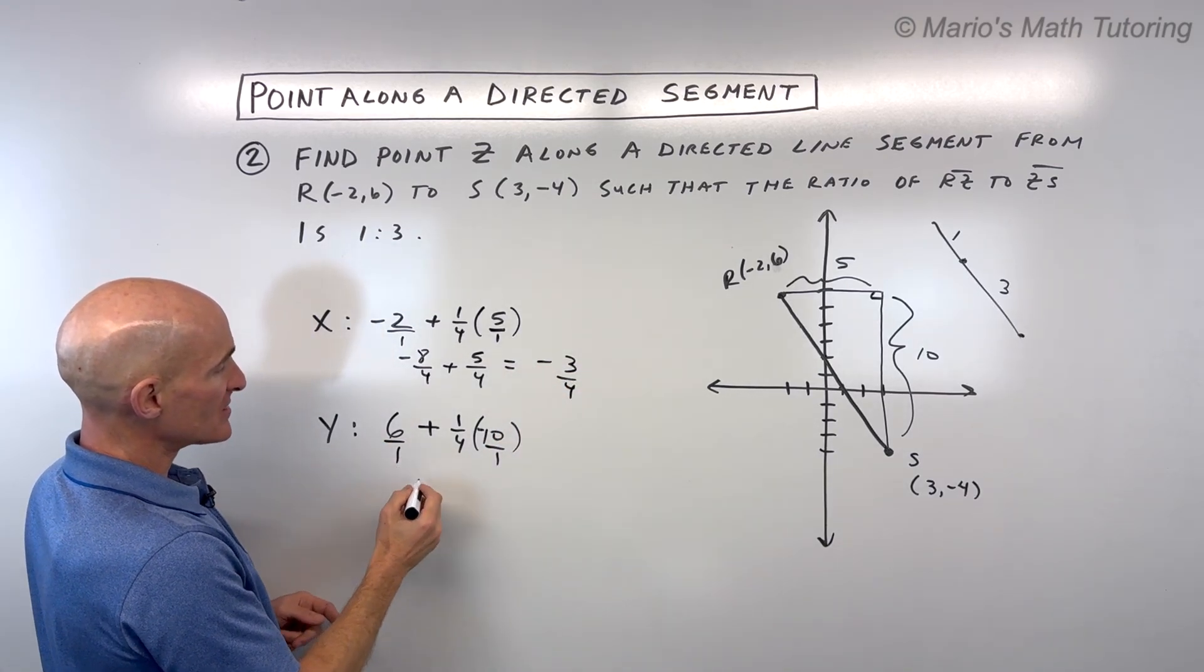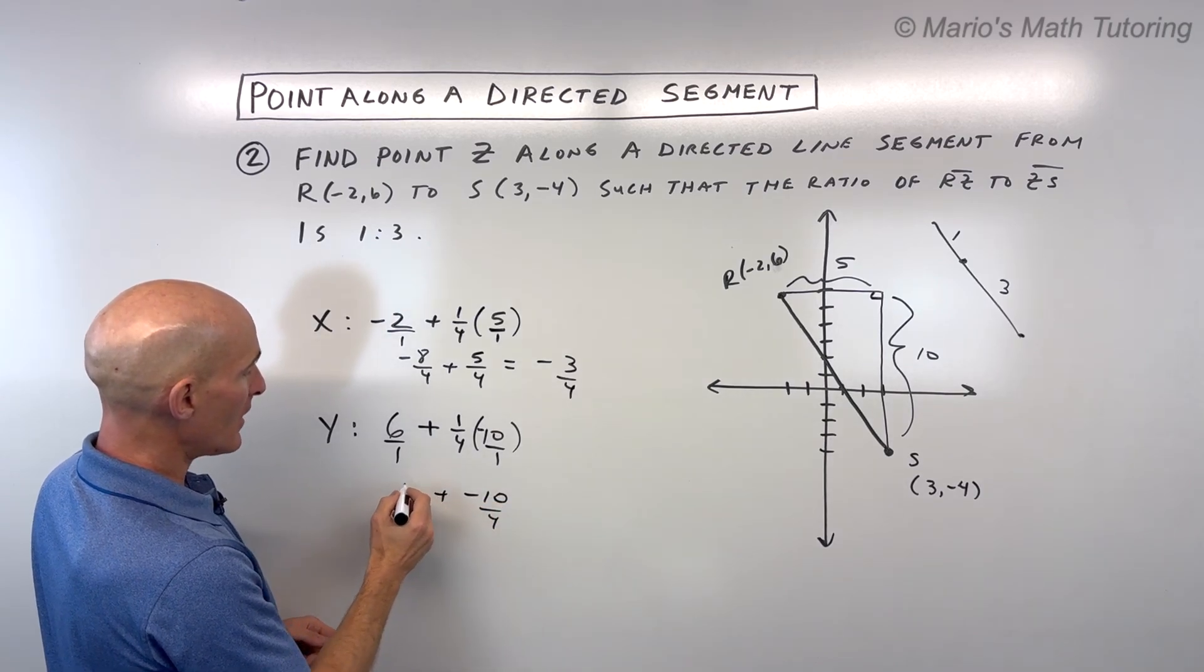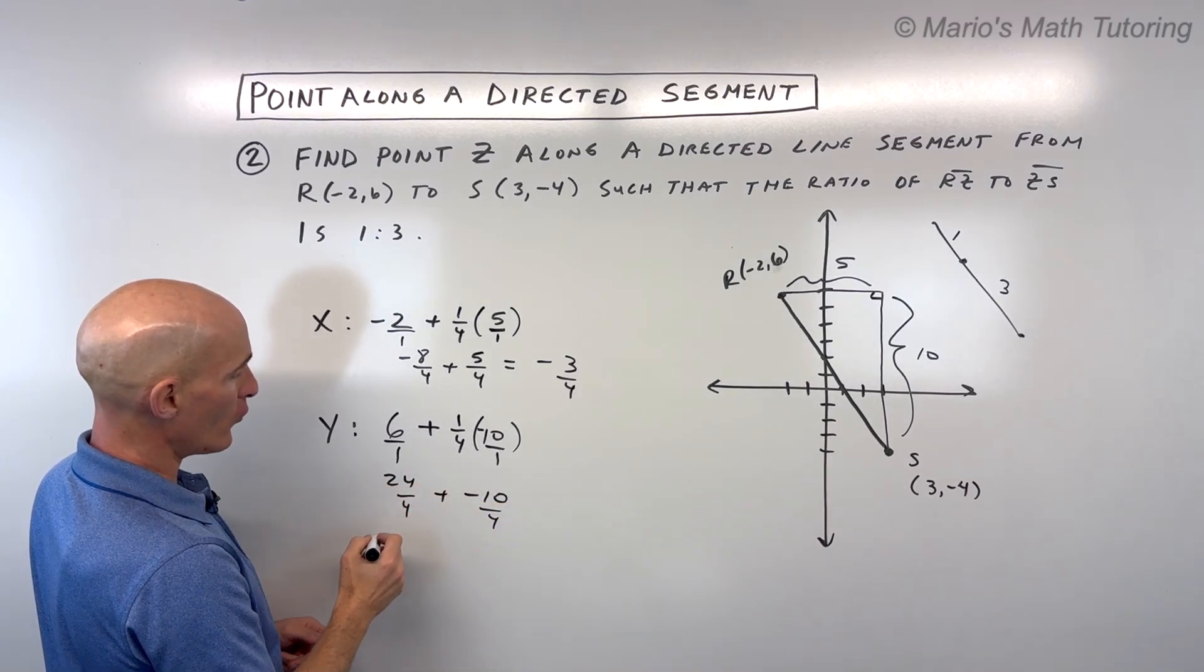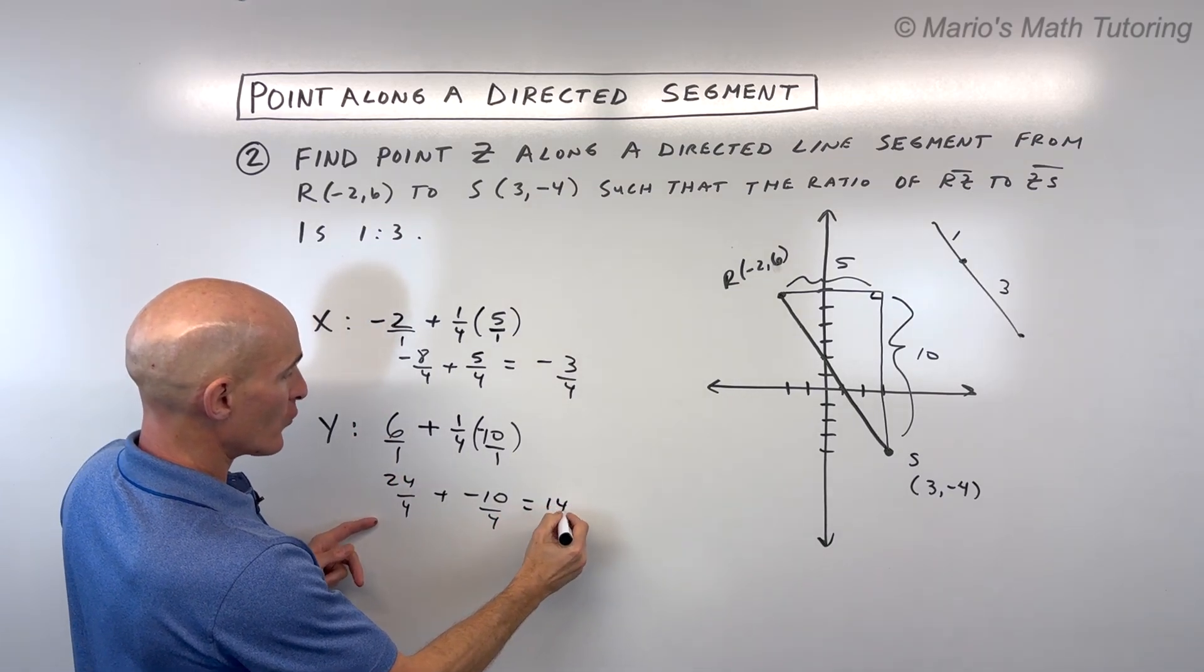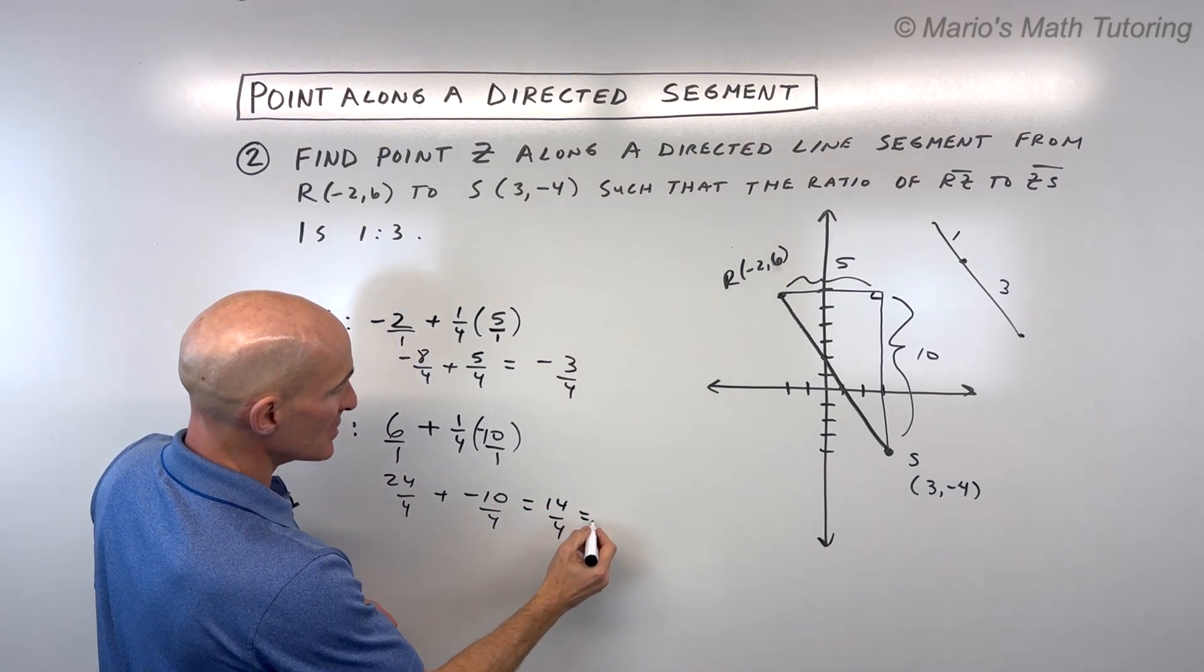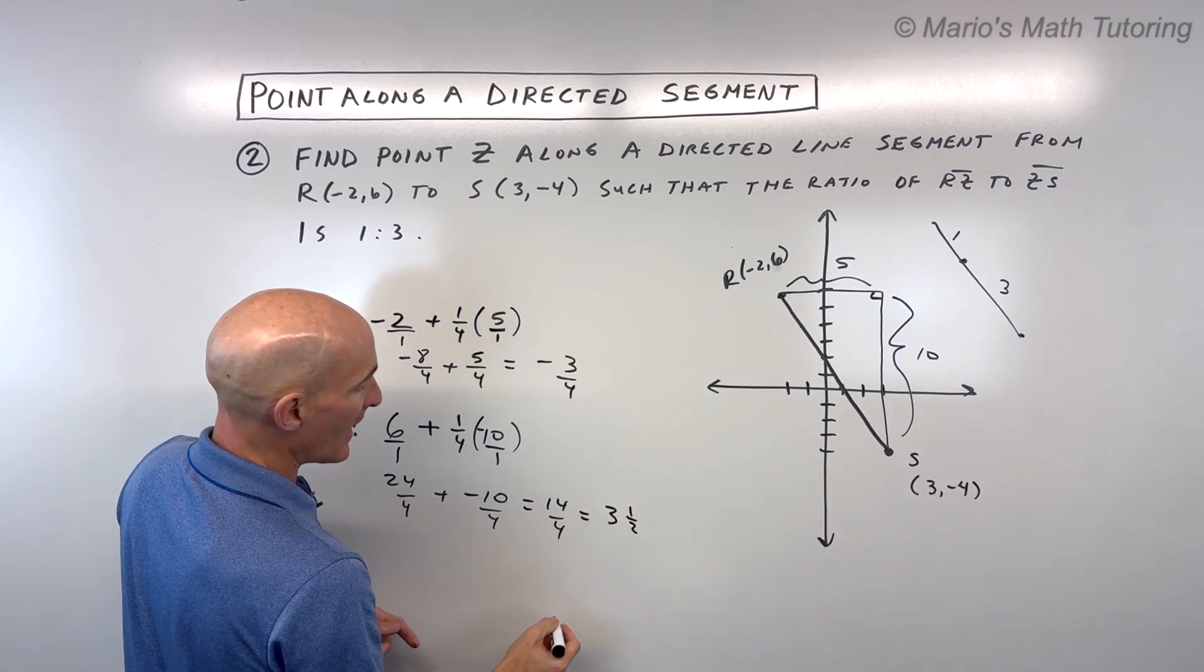Same thing over here. This is going to give us negative 10 over 4 plus 24 over 4. If we multiply the top and bottom here by 4, that's going to give us 14 over 4, which is equal to 3 and 2 fourths, which is 3 and 1 half if we reduce.